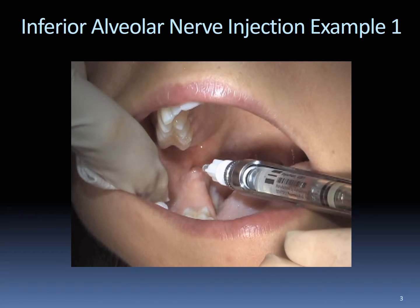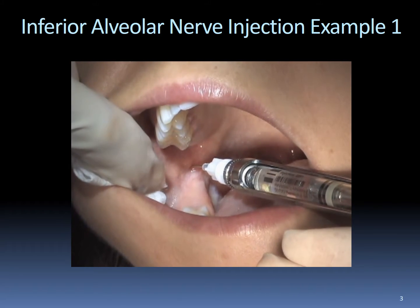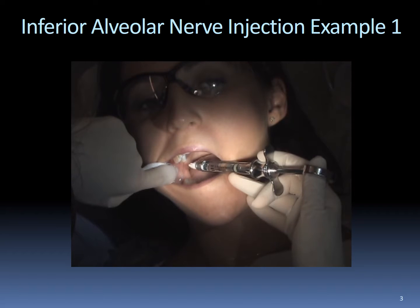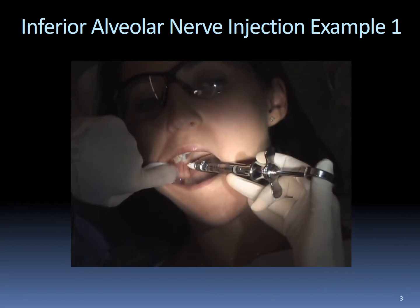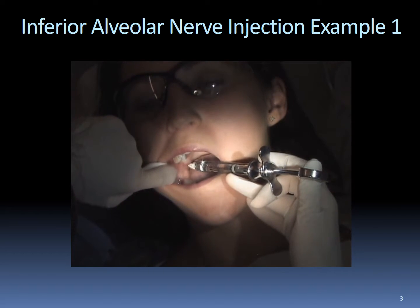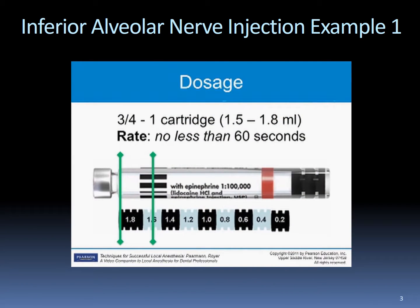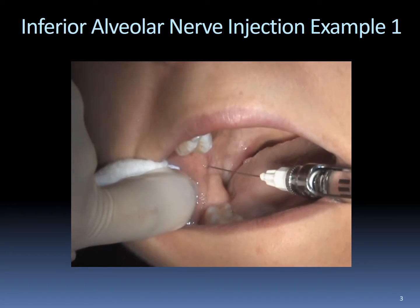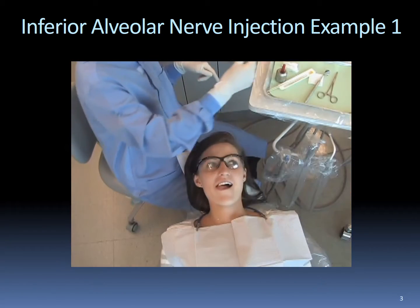Do not deposit unless bone has been gently contacted. Withdraw one millimeter and aspirate at this deposition site. Aspiration may occur more than once. After injecting a half a carpule, it is prudent to aspirate at least one more time. Deposit a minimum of 1.5 milliliters, or about three-fourths of the cartridge. If doing a buccal injection, you will be able to use the remaining fourth of the cartridge for that subsequent injection. After depositing, gently remove the needle and make the needle safe.